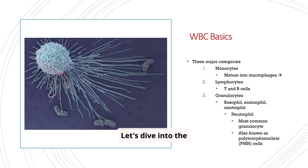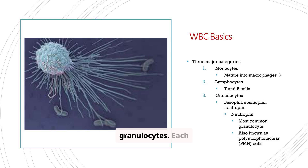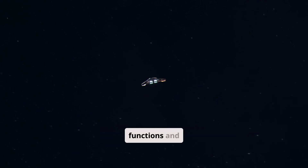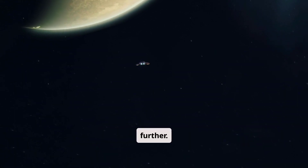Let's dive into the WBC basics. We can broadly categorize them into three major groups: monocytes, lymphocytes, and granulocytes. Each of these groups has unique functions and subcategories that we'll explore further.